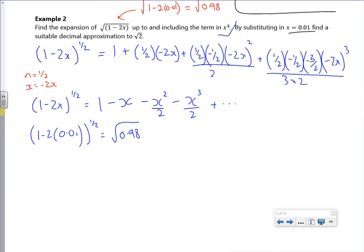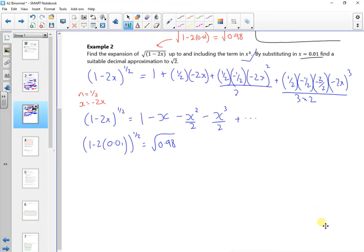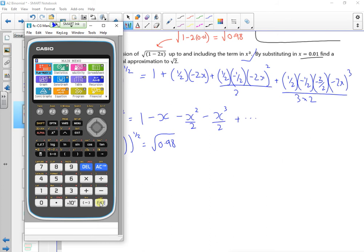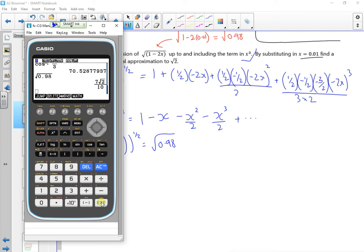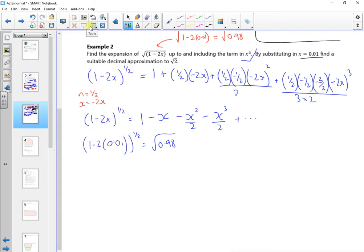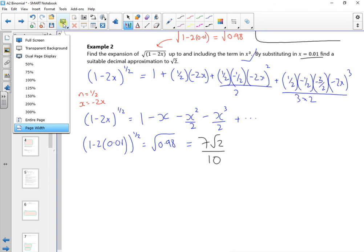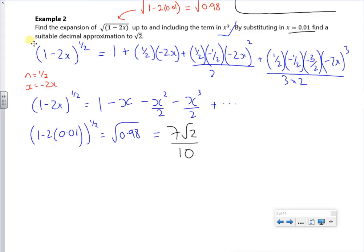Now, if I put root 0.98 in my calculator, so if I do shift root 0.98, it gives me 7 root 2 over 10. So this is equal to 7 root 2 over 10. So if I sub 0.01, I've not quite got the answer that I want. So if I put it into here, I know that I get 7 root 2 over 10. That's where I get if I put the 0.01 in the left.